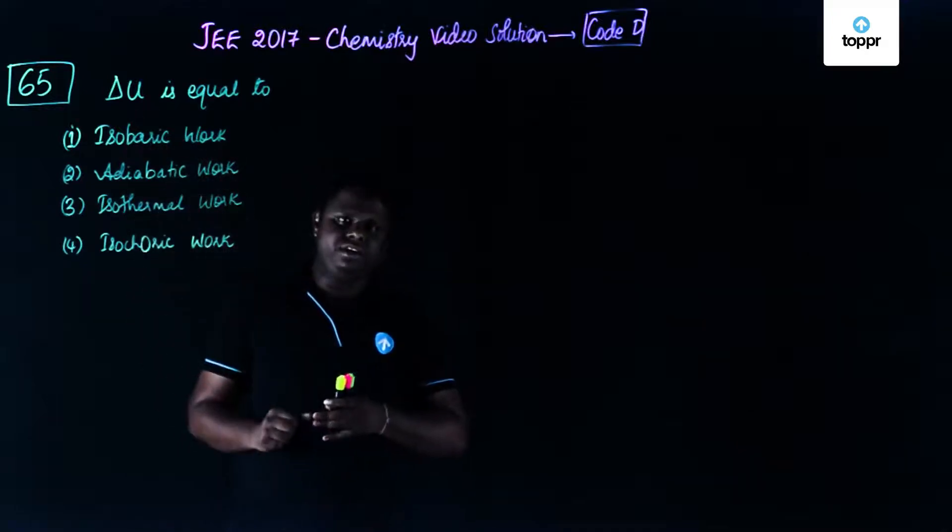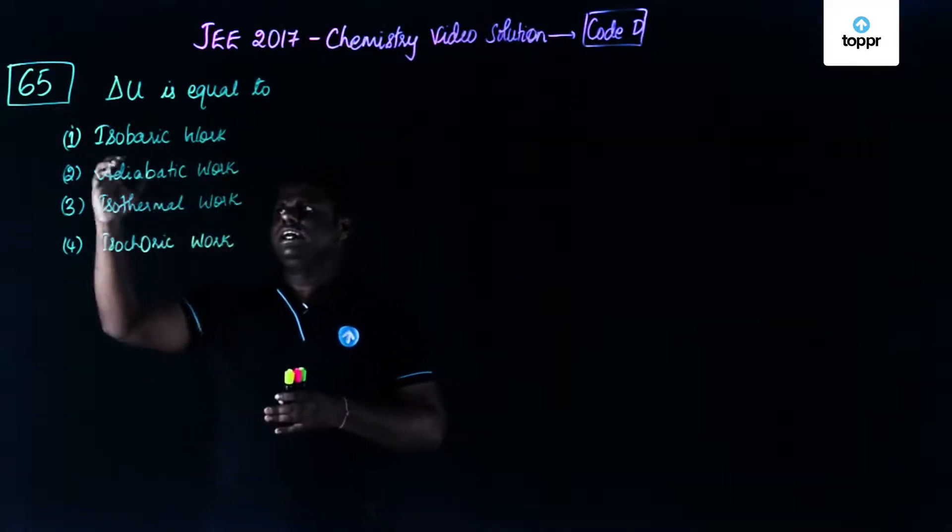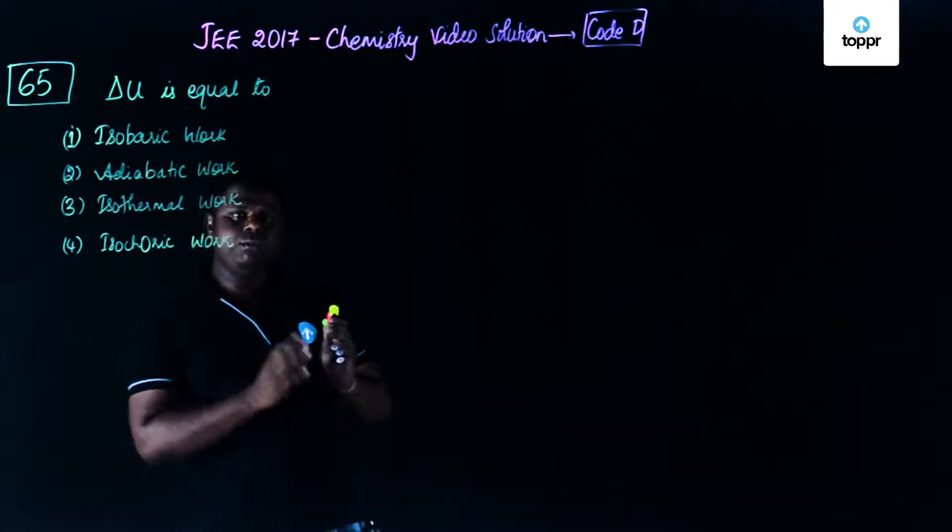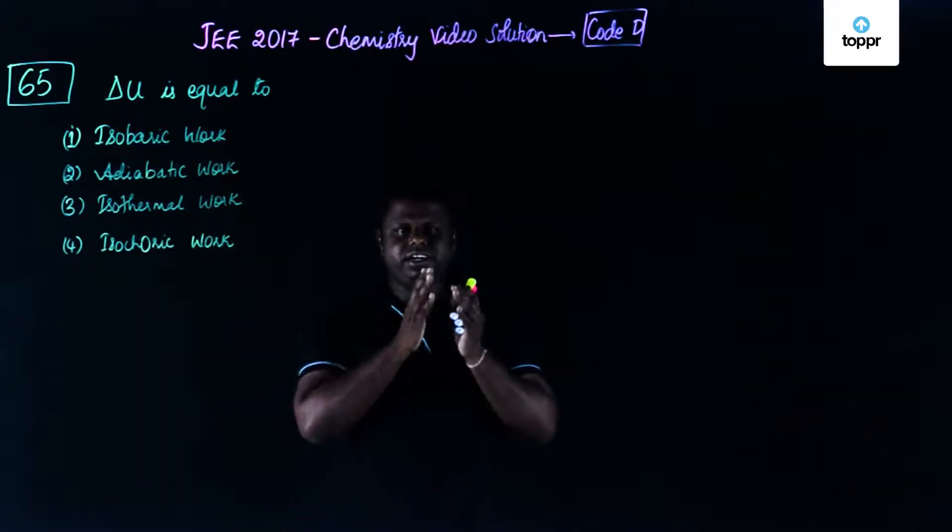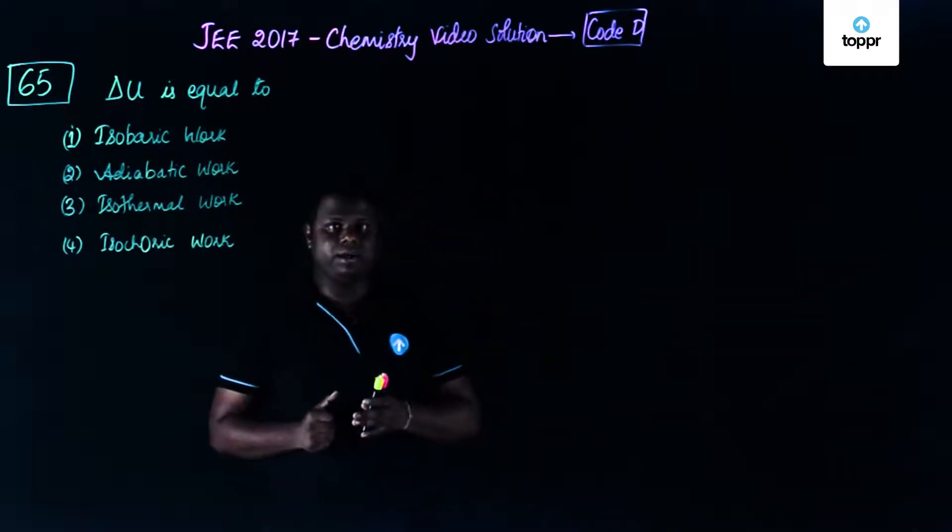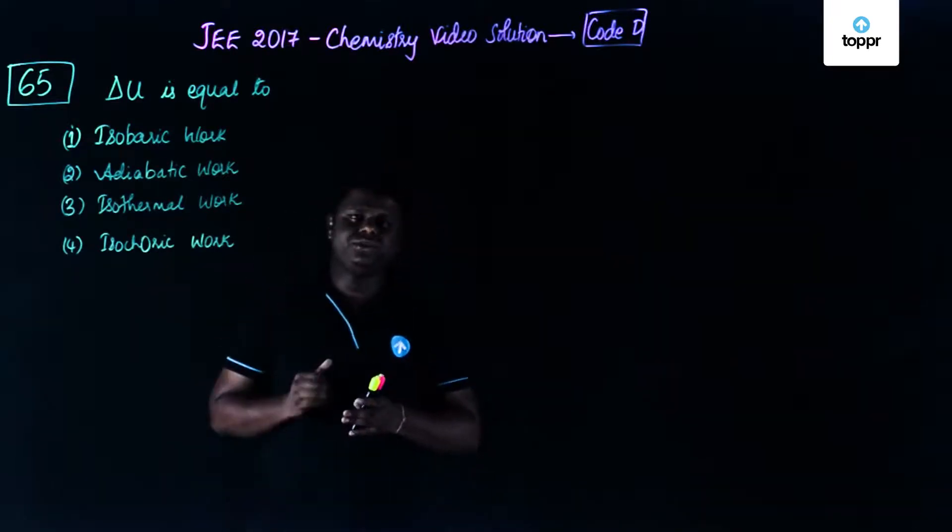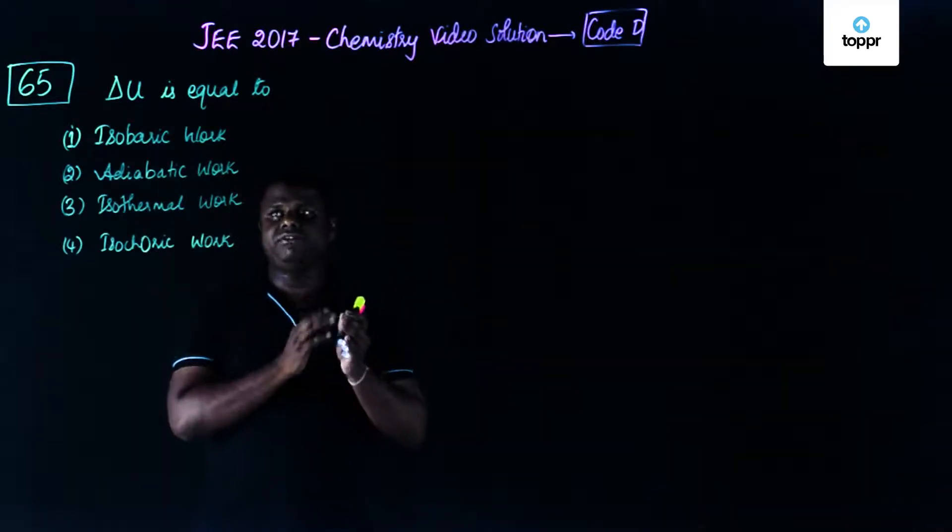Delta U, change in internal energy, is equal to... there are four options have been given. Most of you may get a little bit worried because this seems to be incomplete. But this question is not incomplete, it has to be approached in a different way.